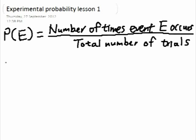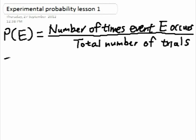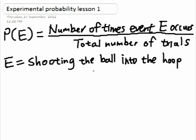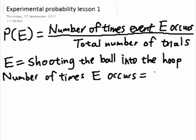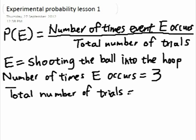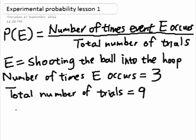So if you remember from our experiment, the number of times event E occurs — our event was shooting the ball into the hoop — and the number of times it occurred: I got a total of three shots into the hoop, so that's three. The total number of trials simply means how many shots have I taken, and I've taken nine shots in total in that game against my brother. So therefore, the probability of E occurring is three divided by nine, which is equal to one out of three.